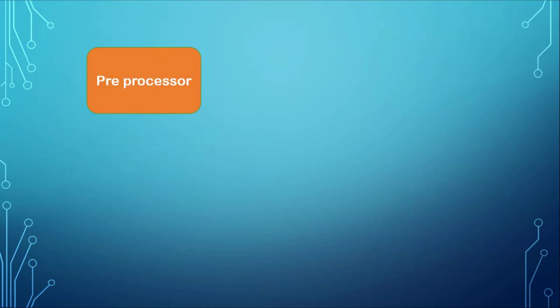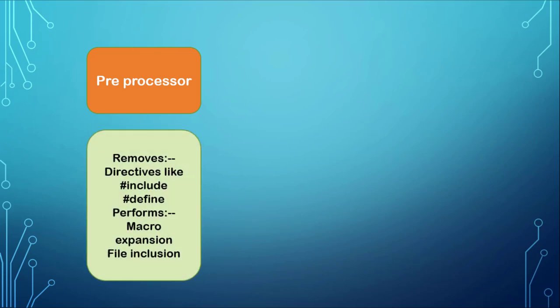The first software module is the preprocessor, whose input is high level language and output is pure high level language. In a C program, lines like #include <stdio.h> and #include <conio.h> are called preprocessor directives. The preprocessor removes these lines by including the files related to them — this is called file inclusion. Whatever files you want to include, the preprocessor substitutes that entire file into your source program. The preprocessor also performs macro expansions.